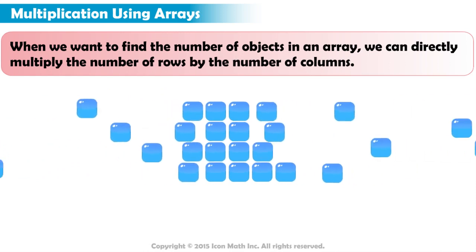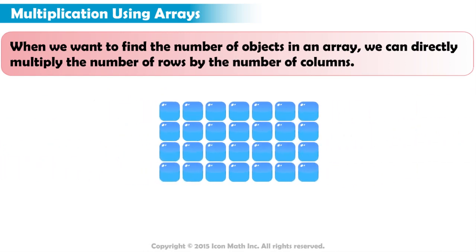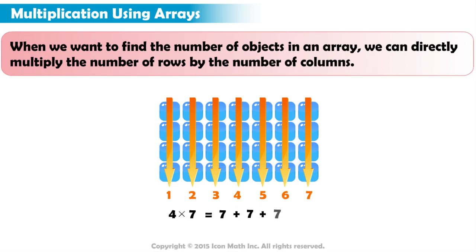Have a look at this array. To find the number of objects in it, we can multiply the number of rows, four, by the number of columns, seven, which is the same as adding seven to itself four times, and that equals twenty-eight.